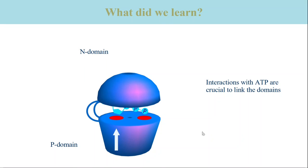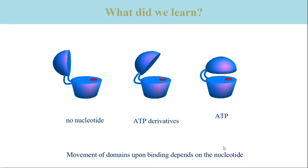Obviously, the interactions between the ATPase domains and ATP are crucial to link the two domains in the closed conformation. In particular, the interactions with the ribose hydroxyls are key. Our results are summarized here: without nucleotide, the conformation is open; with ATP, the conformation is closed.